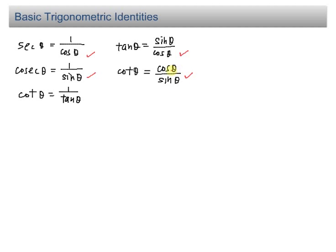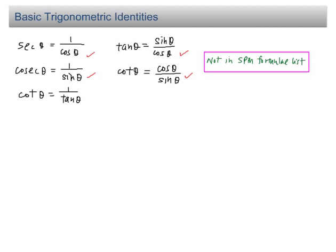This is very useful to prove some trigonometric identities. Please take note that these simple trigonometric ratios are not given in the SPM formula list. Next, I'm going to show you the three basic trigonometric identities. These are very frequently tested in SPM questions, so make sure you are familiar with them.